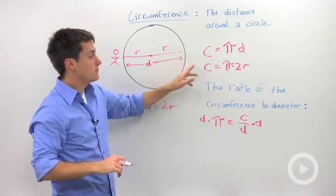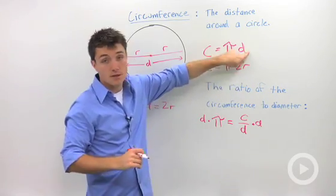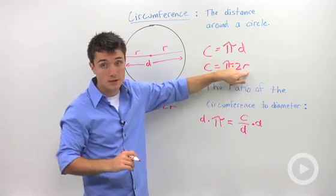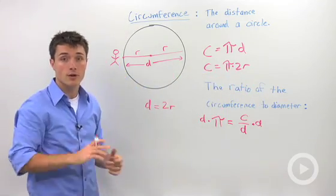So either of these equations, when you know one of their variables - either the diameter, circumference, or radius - will allow you to solve for that other missing variable.